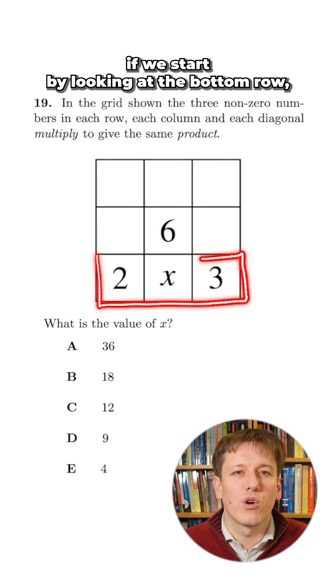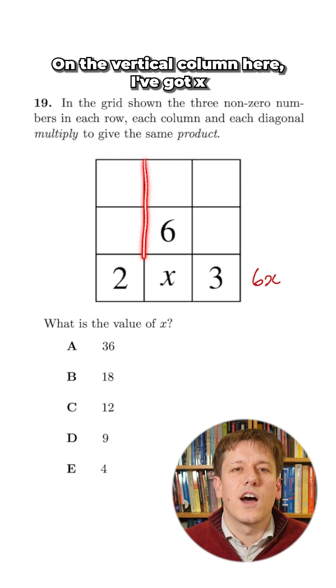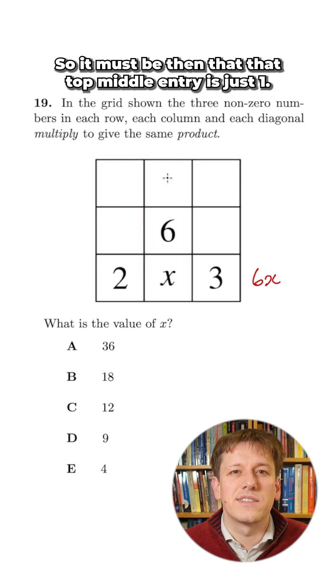Well, if we start by looking at the bottom row, we can see that the magic product here is 2 times 3 times x, which is 6x. On the vertical column here I've got x times 6 times something is 6x, so it must be then that that top middle entry is just 1.